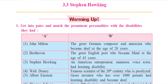He was a great physicist. What is the meaning of physicist? An expert in the subject physics. He was also a cosmologist. What is the meaning of cosmologist? A person who studies cosmology. What is cosmology? Cosmology is the science of the origin and the development of the universe.